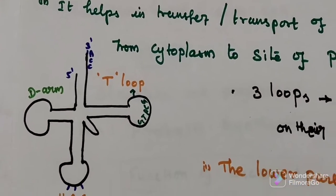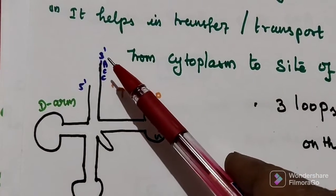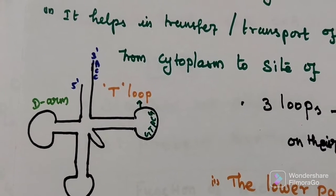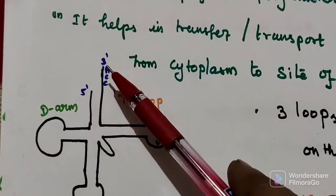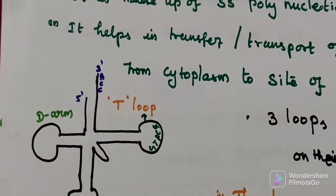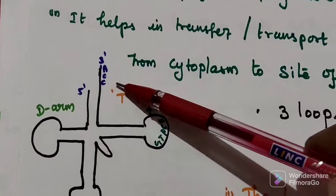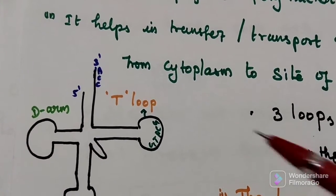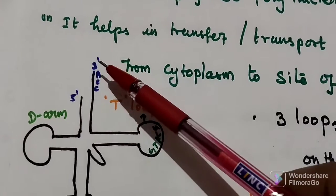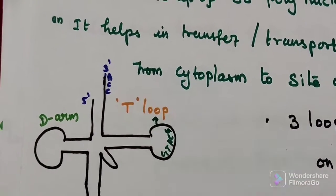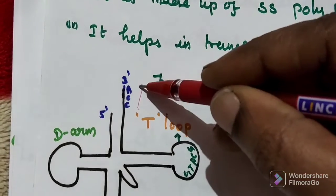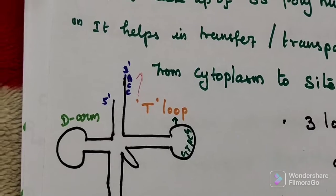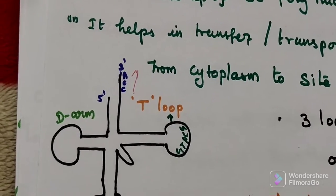Here, the 3' end is slightly extended. We call it the overhang. The last code is CCA. We always read codons from 5' to 3'. So we read CCA in this direction, we cannot read ACC.